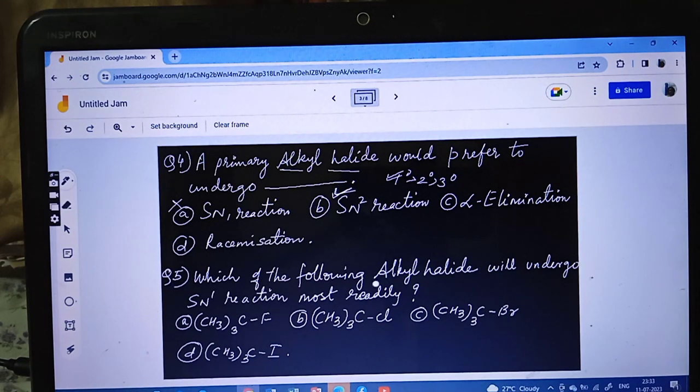Now, fifth question: which of the following alkyl halide will undergo SN1 reaction most readily? In SN1 we just discussed, the order is 3 degree > 2 degree > 1 degree. So let's see which one is 3 degree. You can see all 4 options are 3 degree.